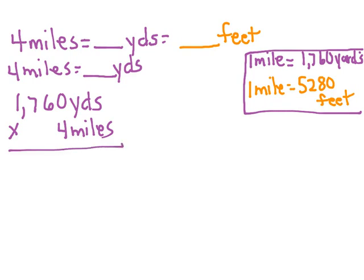4 times 0 is 0. 4 times 6 is 24. Carry the 2. 4 times 7 is 28, and 2 more is 30. 4 times 1 is 4, plus 3 is 7. So I can see that 4 miles equals 7,040 yards.